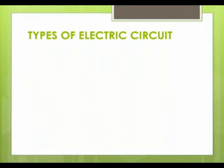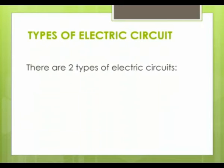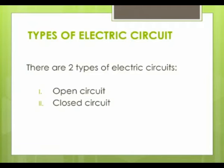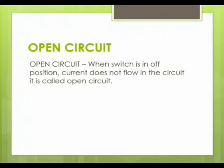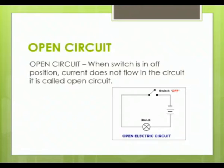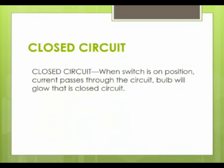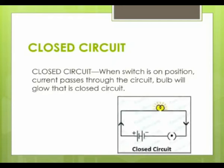There are two types of electric circuits: open circuit and closed circuit. In an open circuit, the switch is in the off position and current does not flow. As you can see in the diagram, the switch is open so current does not flow. In a closed circuit, the switch is in the on position, current passes through the circuit, and the bulb glows. You can see in this diagram that the switch is closed, current is flowing, and the bulb is glowing.